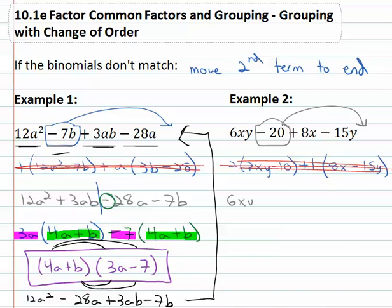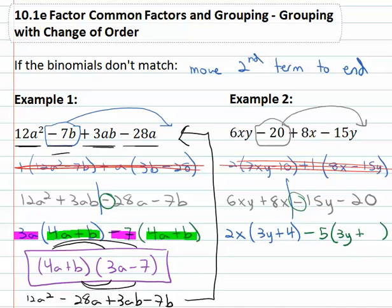Plan B then is to grab that second term and move it to the end. Let's try it. We now have 6xy + 8x - 15y - 20. Now let's see if we can group the left side and right side together. 6 and 8 are both divisible by 2. They also both share an x. When we divide 2x out, 6xy becomes 3y plus 8x divided by 2x is 4. On the right side, our GCF is going to match the sign. 15 and 20 are divisible by 5. When we divide negative 5 out, negative 15y divided by negative 5 is positive 3y, and negative 20 divided by negative 5 is positive 4.